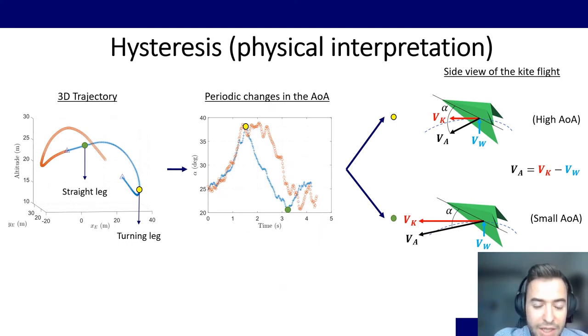And then looking into the physical interpretation of this phenomenon, we found the following. So we plot again the same 3D trajectory, and we are focusing in this slide only on the blue part. We analyze two legs of this semi-figure of 8, the turning leg first, and then the straight leg.